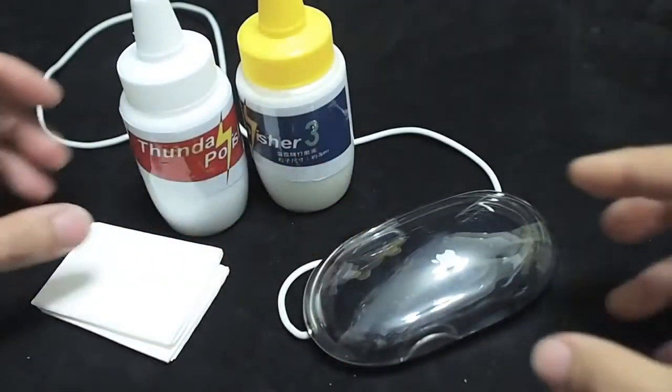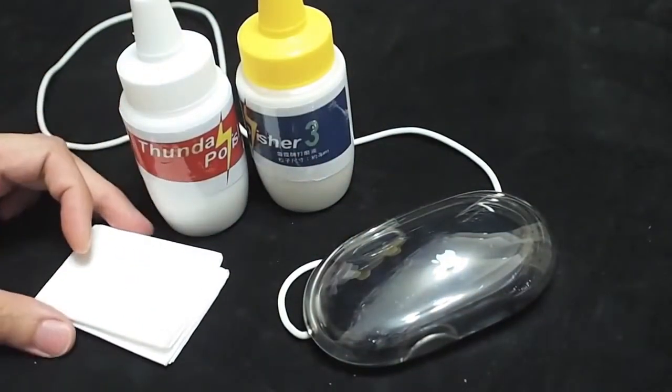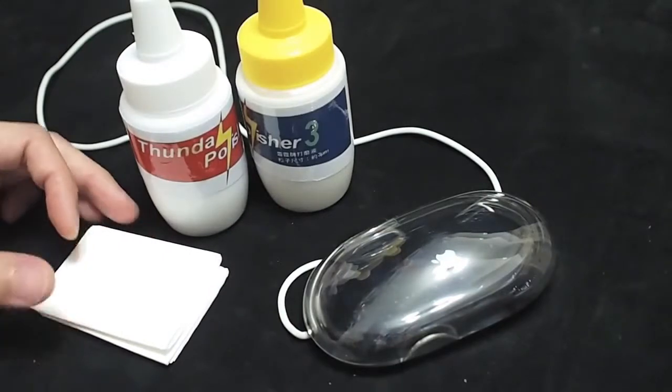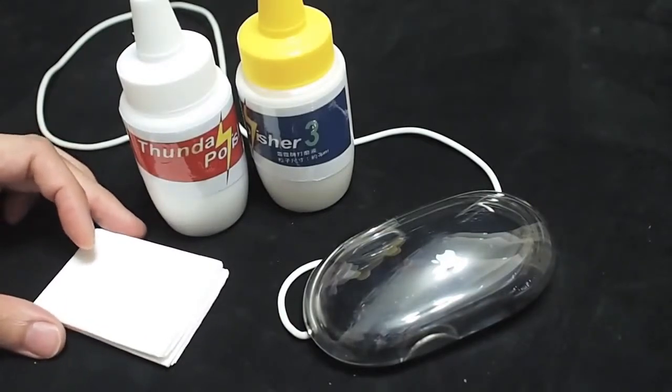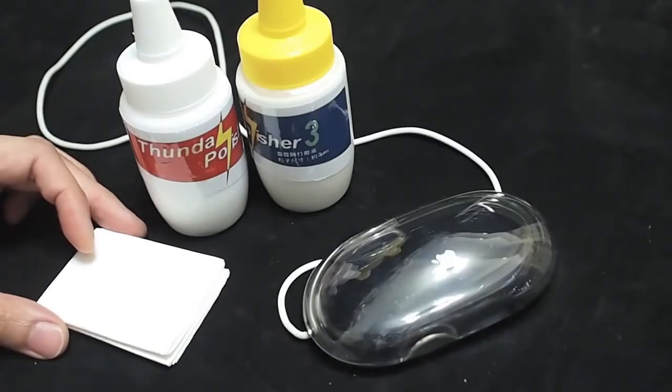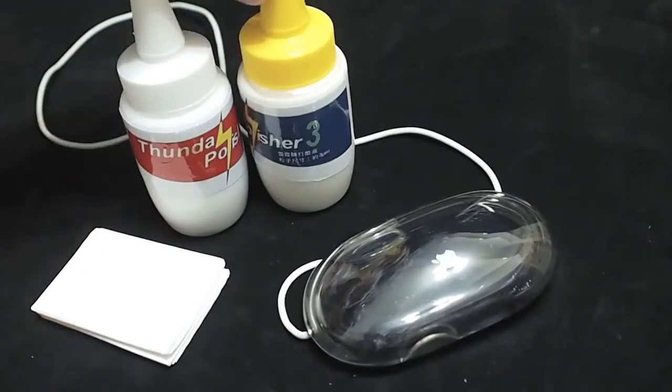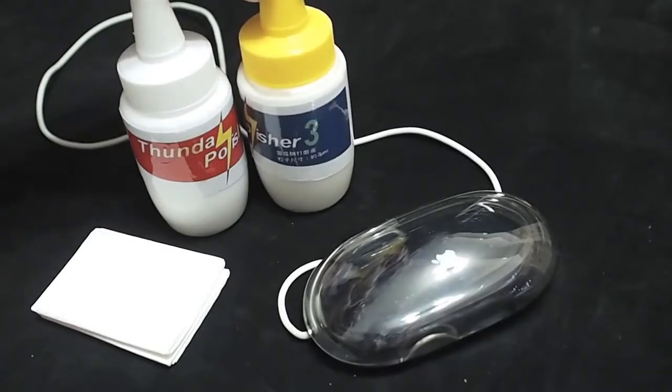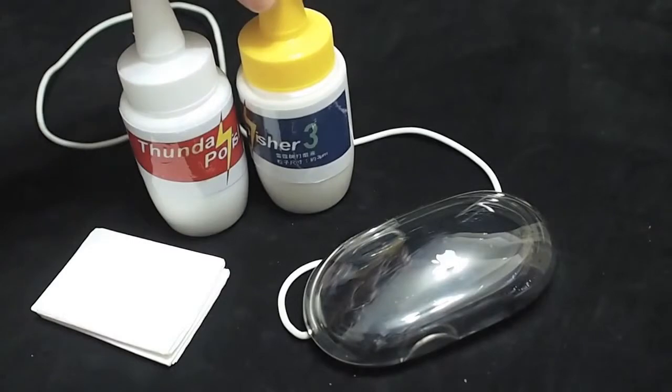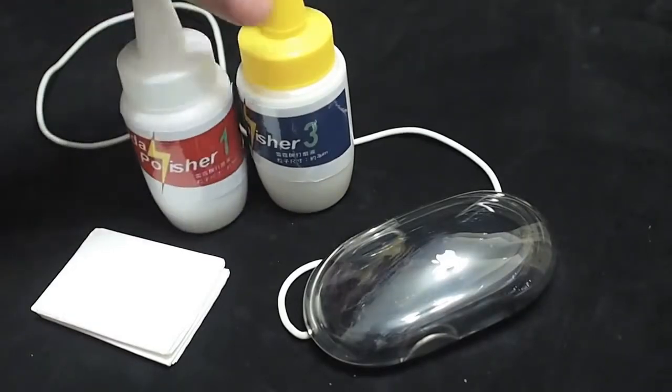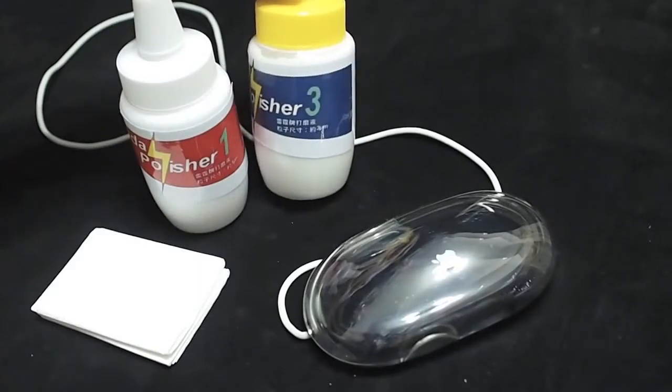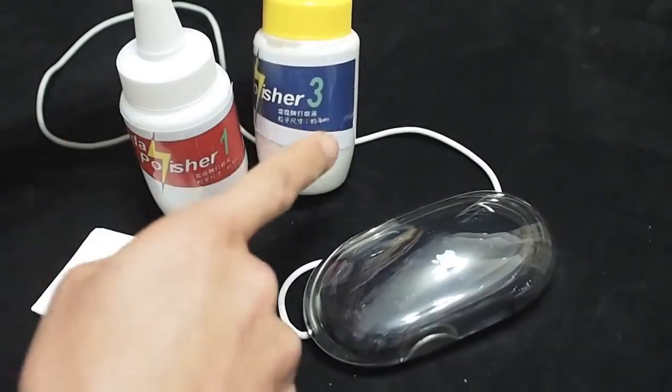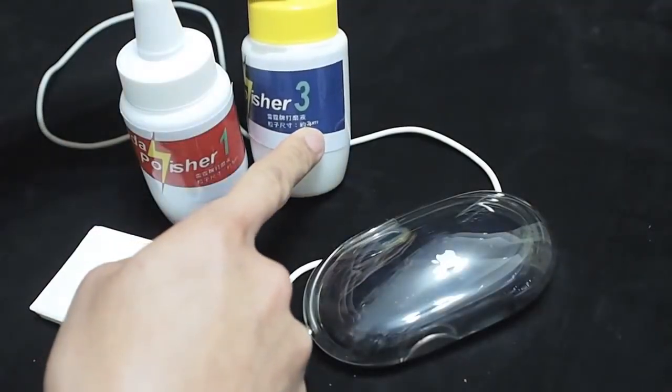To remove those scratches, we need to use some plastic polisher. Different countries have different ranges of polisher, but they share a common principle, which is they have different kinds of particle size. This is number 3 of the plastic polisher, and the particle size is 3 micrometers.